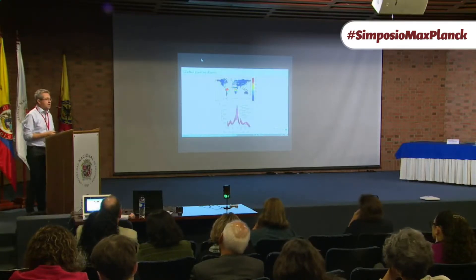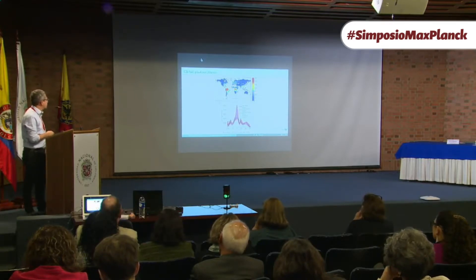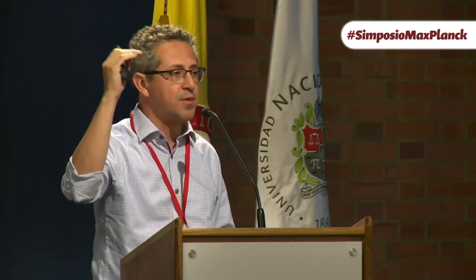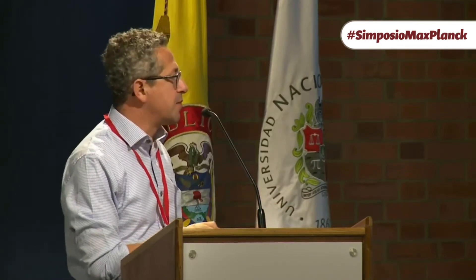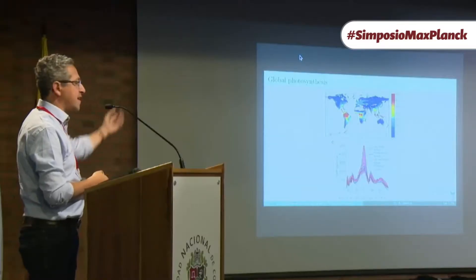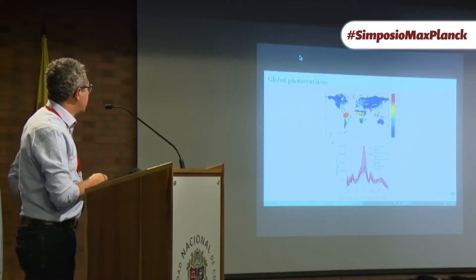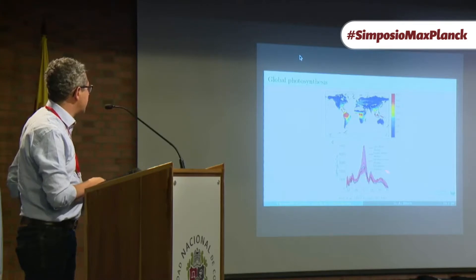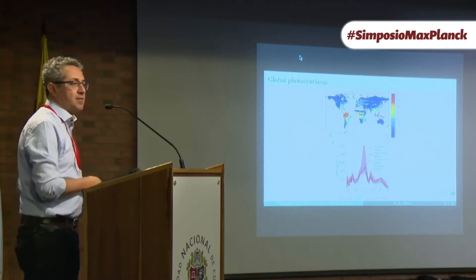Now let's look at a map of global photosynthesis, produced at our institute using satellite observations combined with observations from flux towers that measure the exchange of CO2 between forest and atmosphere. When you combine these two datasets, you get maps showing where and how much photosynthesis occurs on earth. We can clearly see that the tropics are the regions with the largest photosynthetic fluxes — this is where most carbon is taken up each year. As we move to temperate and boreal regions, we see much less photosynthesis.